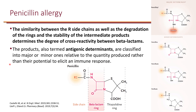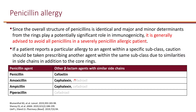Looking at penicillin structure, there is the beta-lactam ring fused with a second ring, and importantly an R1 sidechain that differs depending on the specific penicillin. Metabolic byproducts are labeled as major or minor determinants. The similarity between the R sidechain and degradation products determines the degree of cross-reactivity. Since the overall structure of penicillins is identical and ring determinants play a significant role, it is generally advised to avoid all penicillins in a severely penicillin-allergic patient.